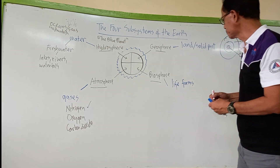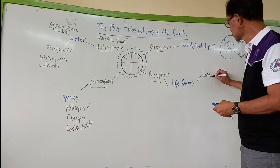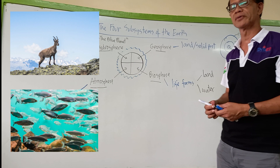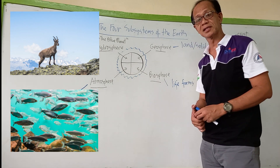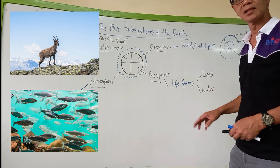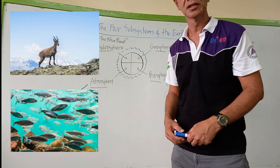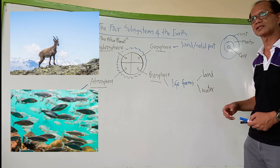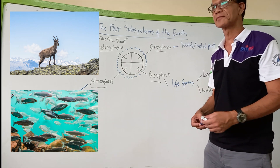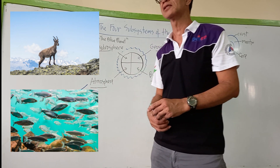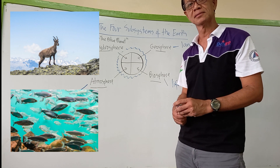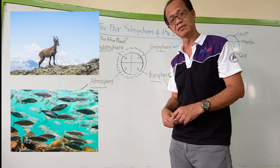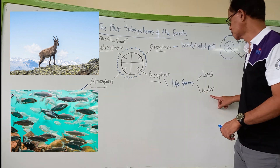The biosphere can be present on land and also in water. On land, life forms can be found in mountains, forests, and even in the desert. In water, life forms can be found in the ocean and in fresh water such as lakes. We know there are fish — some fish live in salt water and some fish live in fresh water.